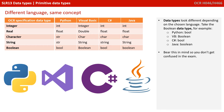In Python, it's lowercase 'bool'. In VB, it's the full word 'Boolean'. In C#, again, it's lowercase. And in Java, it's lowercase but the full word 'boolean'. Bear this in mind so you don't get confused in the exam when you see a data type that might be spelt slightly differently to one that you've been using in a programming language.